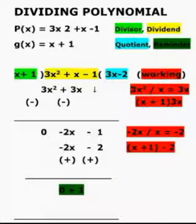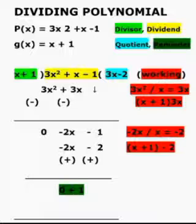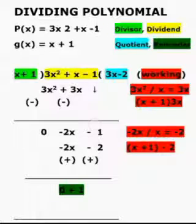Plus 3x² will become minus 3x², and plus 3x will become minus 3x. Plus 3x² and minus 3x² will cancel. And plus x and minus 3x will give minus 2x. Bring minus 1 down, and the same process continues again.